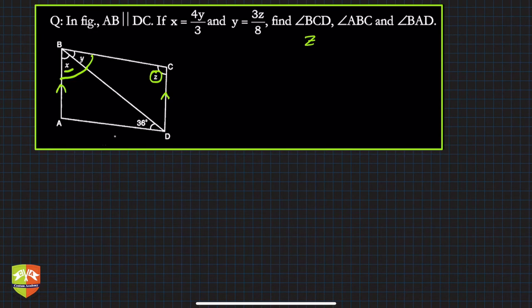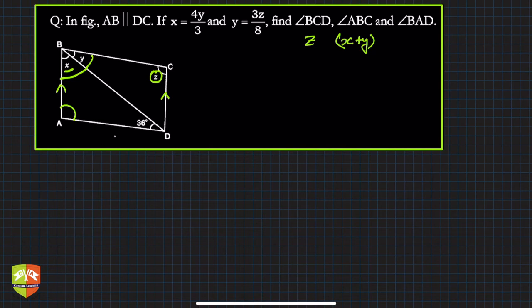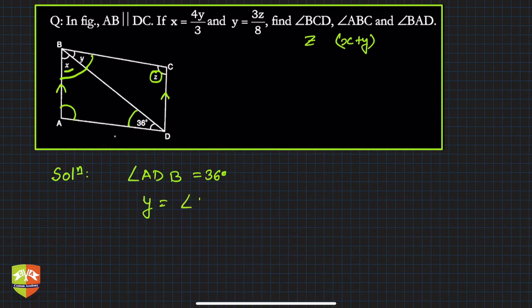Angle ABC from the figure is x + y, and angle BAD is another angle we need to find. We will use concepts of parallel lines, transversals, and alternate interior angles. Angle ADB is given as 36 degrees. We can't directly equate y to angle ADB since those lines aren't parallel.